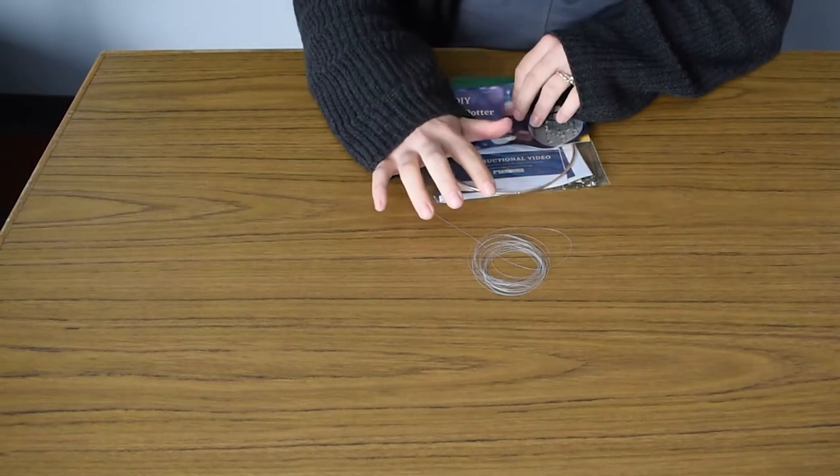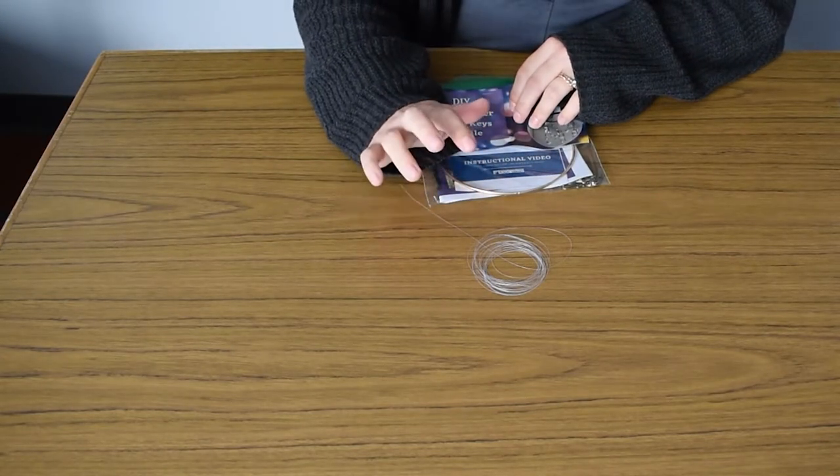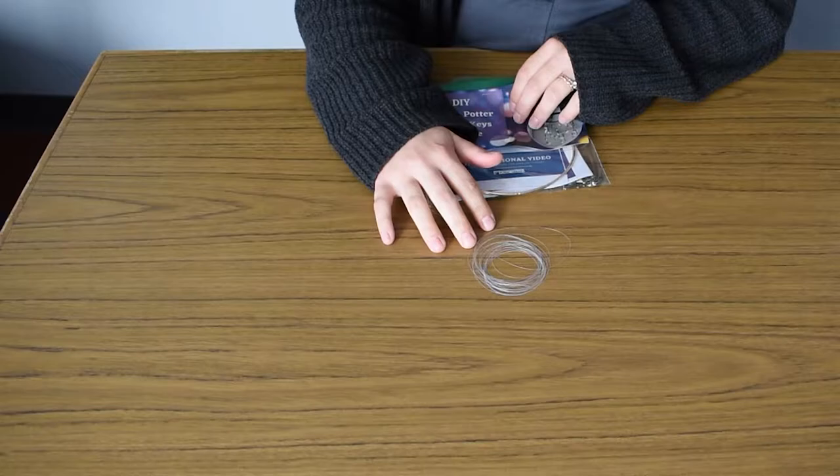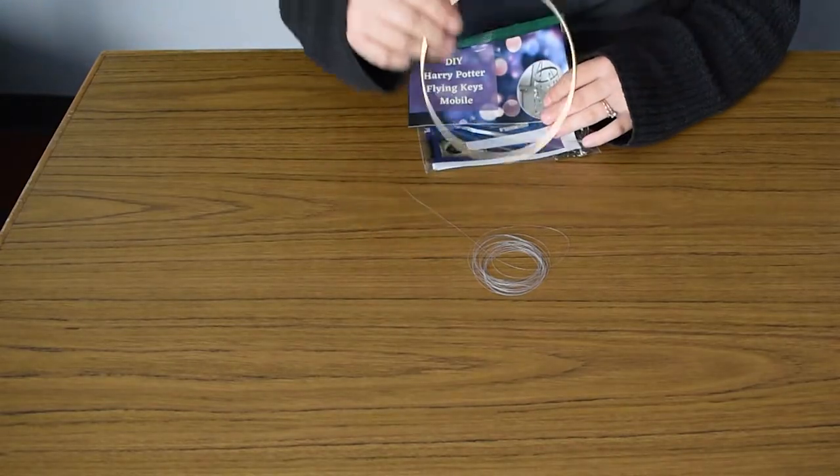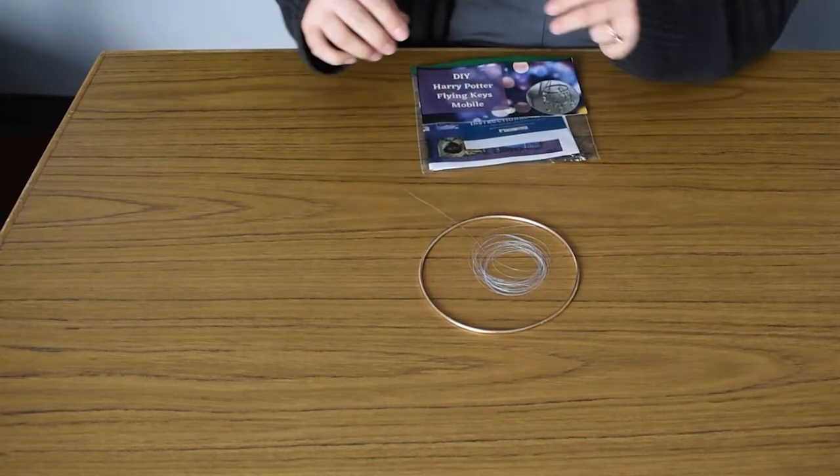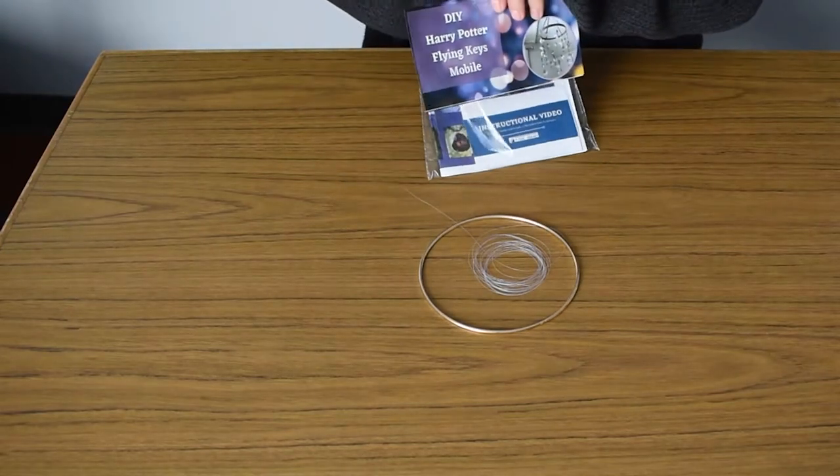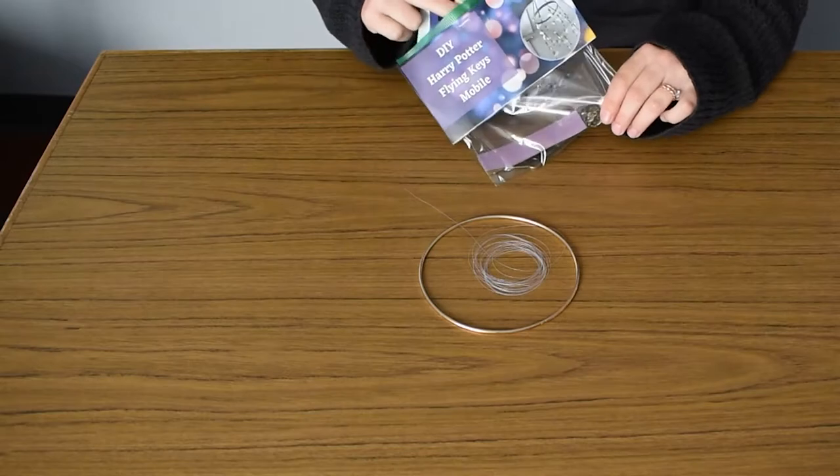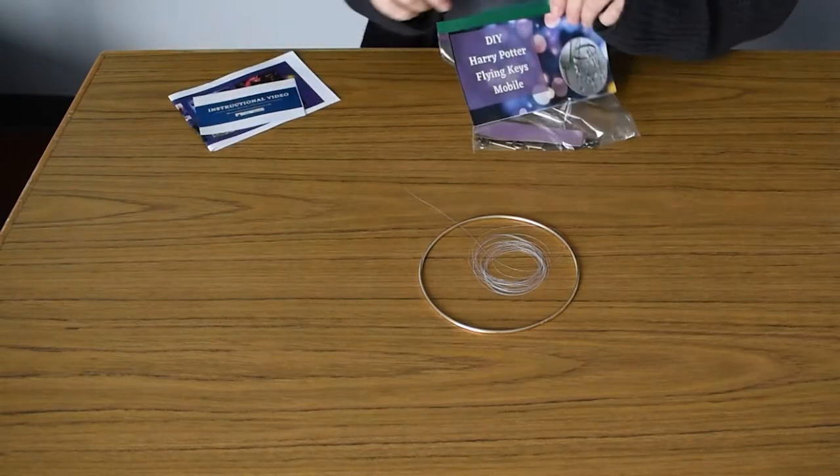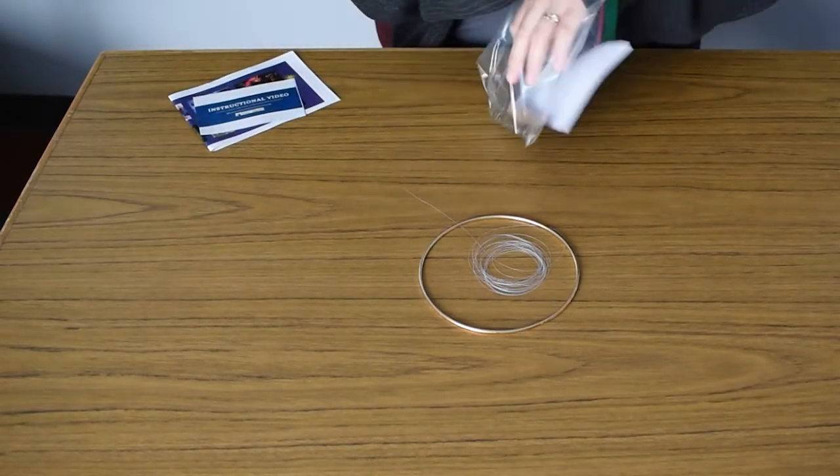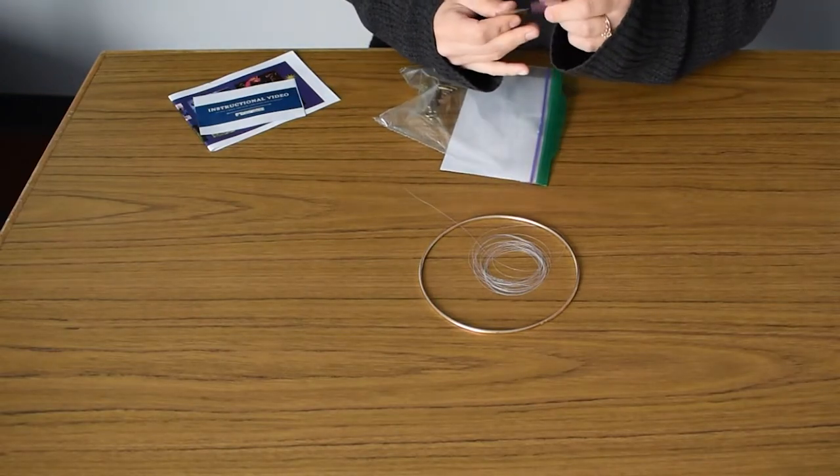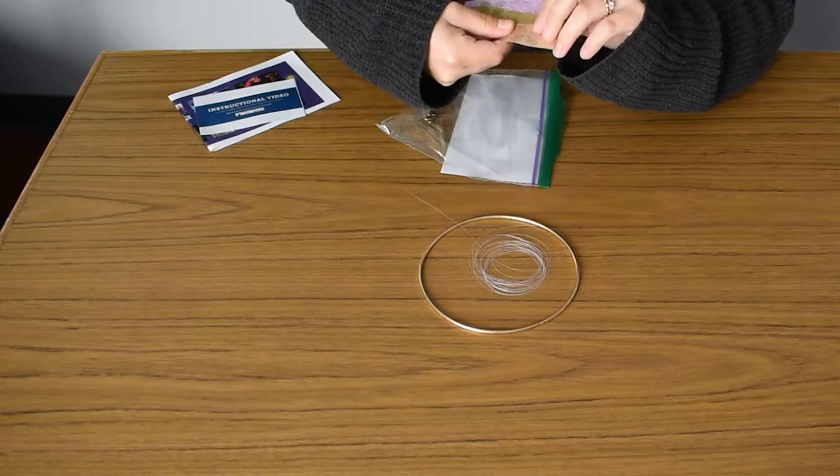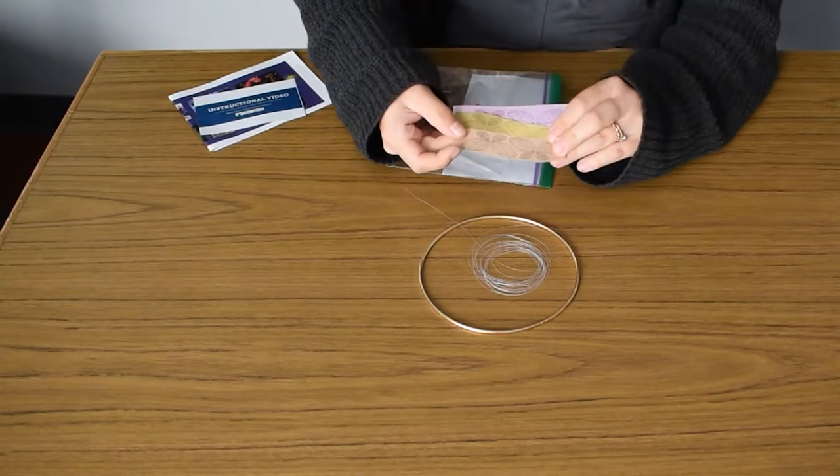So you'll have your fishing line here. You'll have a golden hoop. And then you will also have three slips of shiny paper that have some wings on it.